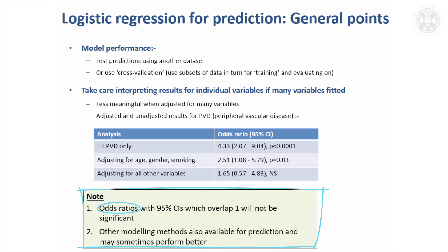An odds ratio of greater than one means you've got a higher risk. But if the confidence interval that you can get for your odds ratio doesn't overlap one, it's equivalent to having a statistically significant result.